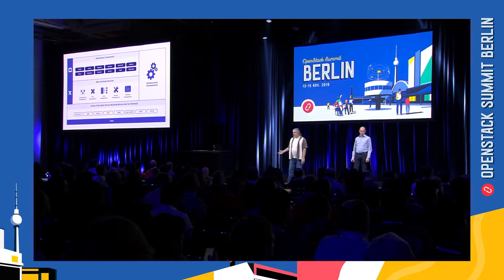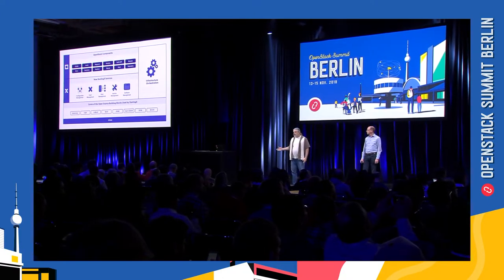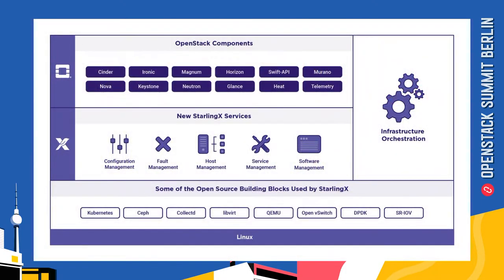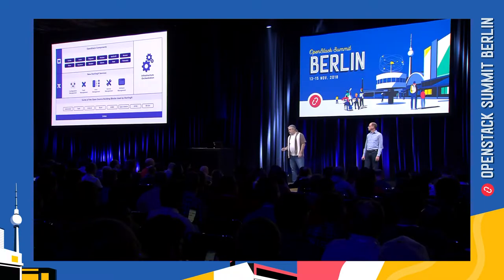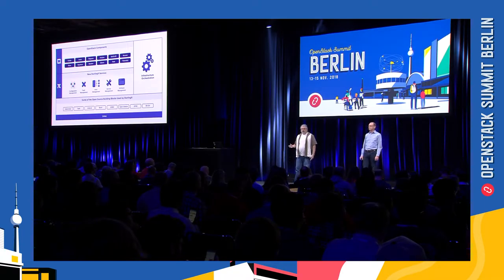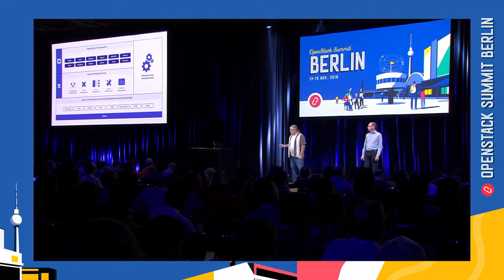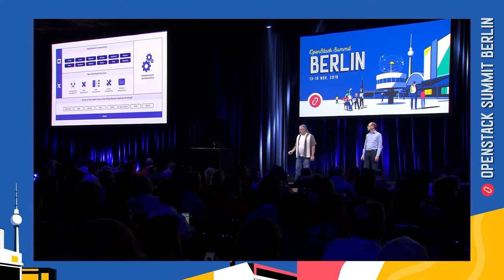StarlingX pulls together a set of well-known open source products and components such as Ceph, CentOS, Libvirt, QEMU, and OpenVSwitch. We add to that an opinionated OpenStack configuration tailored specifically for edge style use cases. And then on top of all of that, we add some new services that fill in some of the gaps and do the integration work for all of these individual pieces. This does everything from initial installation and configuration of the complete cloud to adding APIs for hardware and software inventory, fault and alarm handling and management, detection of and recovery from hardware and process failures, and zero-impact orchestration of patching and upgrades.